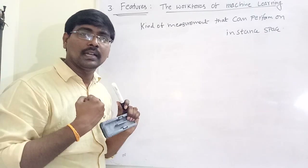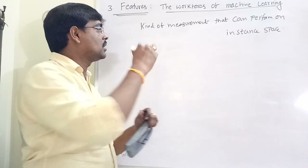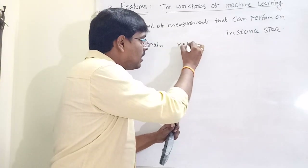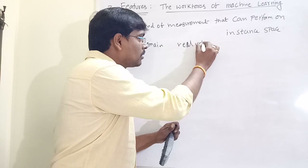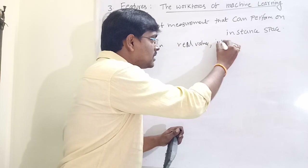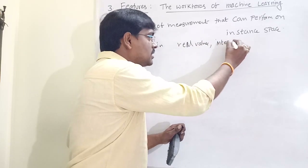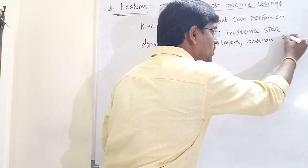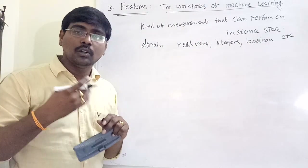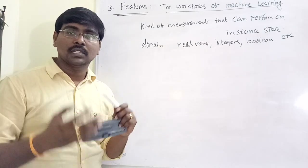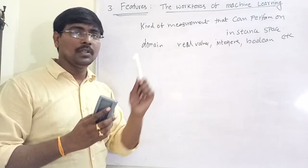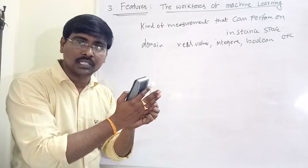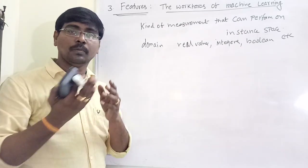The feature domain contains all types of values — either real values, integers, boolean, or some text, etc. By using these features we predict some output.